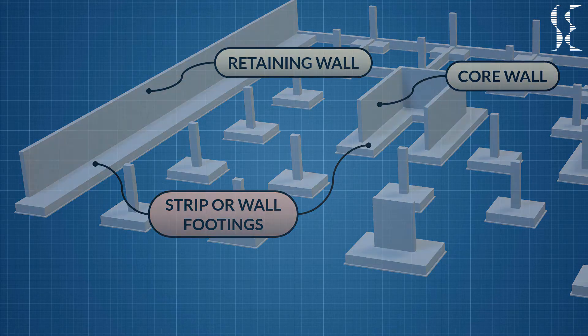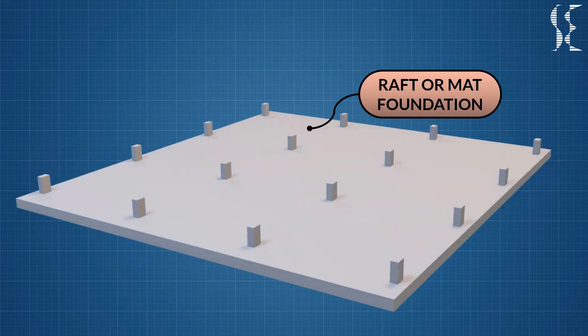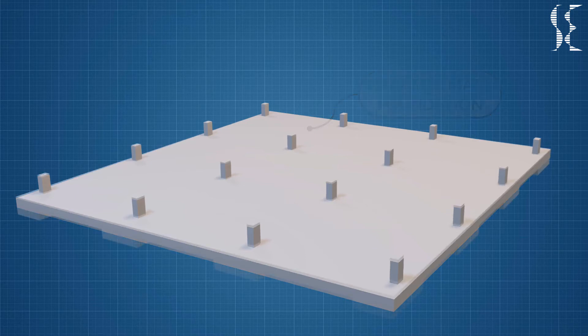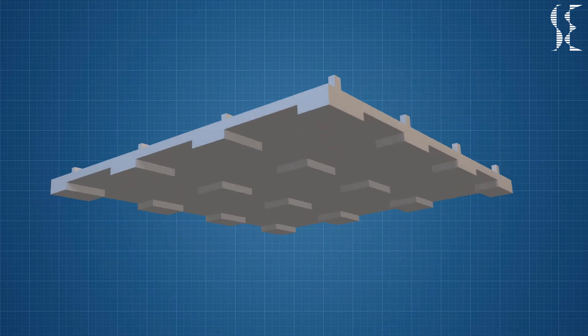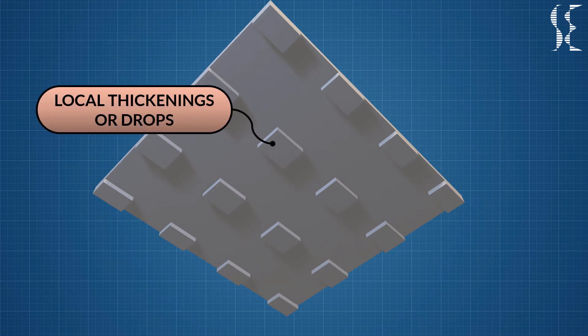Last in shallow foundations we have raft or mat foundation. This type of foundation is provided when column loads are heavy or safe bearing capacity of soil is very low. These are special cases of combined footings when all the columns of the building have common foundation. Raft can have local thickenings or drop below columns if the thickness of raft is insufficient for shear stresses.